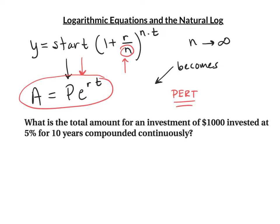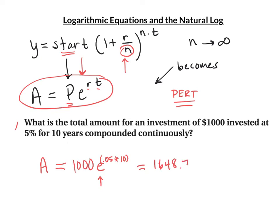Let's model a question with e: how much would you get if you invested $1,000 at 5% for 10 years, compounded continuously? Just take A = P times e to the rt. P is $1,000, r is 0.05, t is 10. Punch this into Desmos — Desmos knows what e is. This investment becomes $1,648.72.